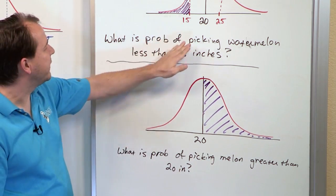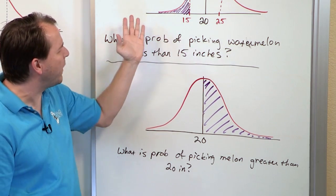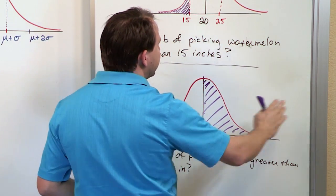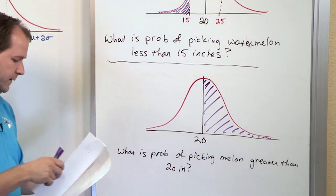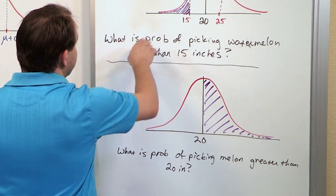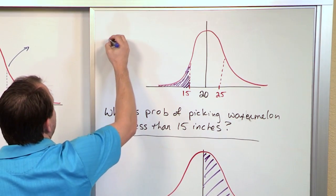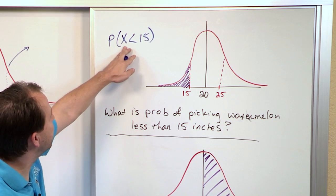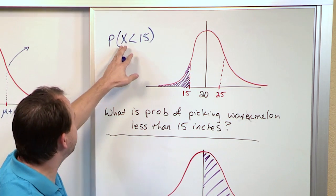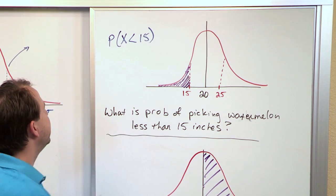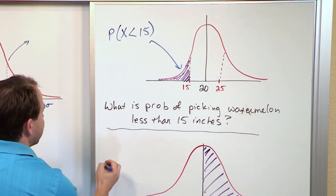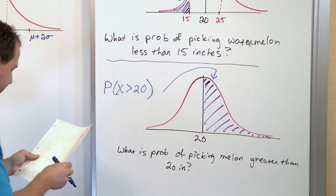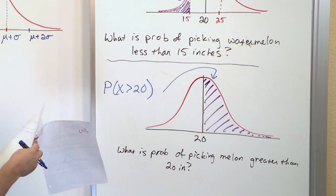So I've given you two examples. When finding the probability of picking something less than a number, you put that number on the distribution and shade to the left. If you're looking for the probability greater than a number, you shade to the right. Mathematically: the probability that random variable X is less than 15 equals that left-shaded area; the probability that X is greater than 20 equals that right-shaded area. We will compute these areas soon.